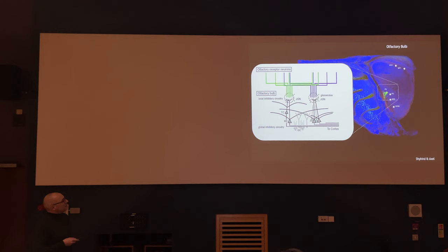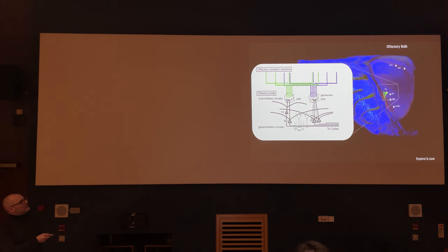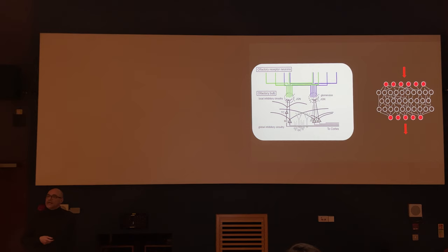Looking more closely at the olfactory bulb: information comes in through the green fibers from the nose, and there is also information flowing out to various cortical areas — including the amygdala, anterior cortex, and piriform cortex. Those axons that come into the brain make contacts in round structures called glomeruli with output neurons — the tufted and mitral cells. There's also a large number of local interneurons that do some kind of computation. So you have an input layer, an output layer, and a lot of computational substrate in this brain structure. The goal of my lab is to use the olfactory bulb as a model system to understand what kinds of computations the brain actually does.